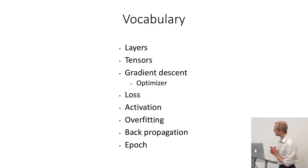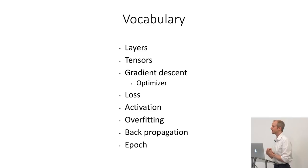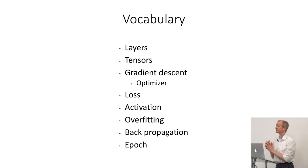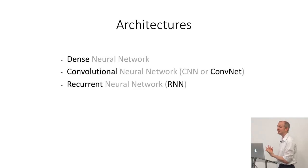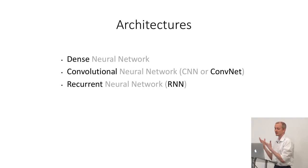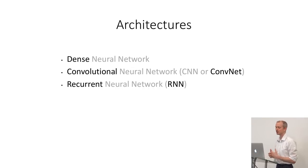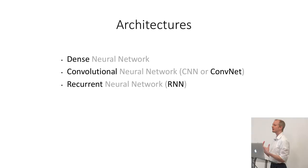Let's take stock of the vocabulary I've gone through. If anybody has questions about any of these terms, let's look at some architectures. These three are really large categories worth knowing about: there's the dense neural network, the convolutional neural network or CNN, and recurrent neural networks — RNN. Each one of these is more typically used for different kinds of problems, so when you have a particular problem you'll also have to decide which approach to take.